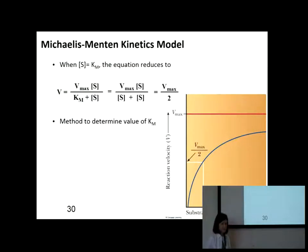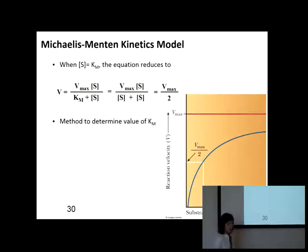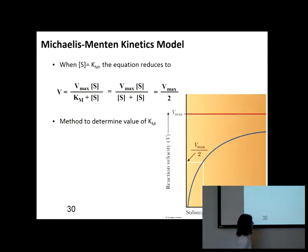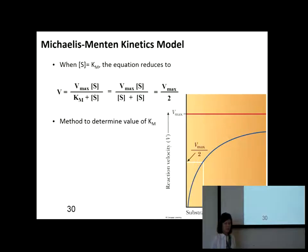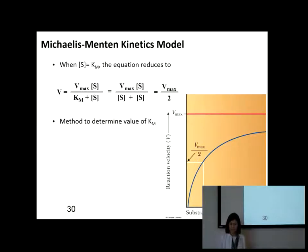We're going to continue talking about our Michaelis-Menten kinetic model. The important take-home message is that our rate and our Michaelis constant have an inverse relationship, meaning that if we have a high affinity, that Michaelis constant is going to be small. A high rate means a small Michaelis constant, and we showed that on the different plots last time.